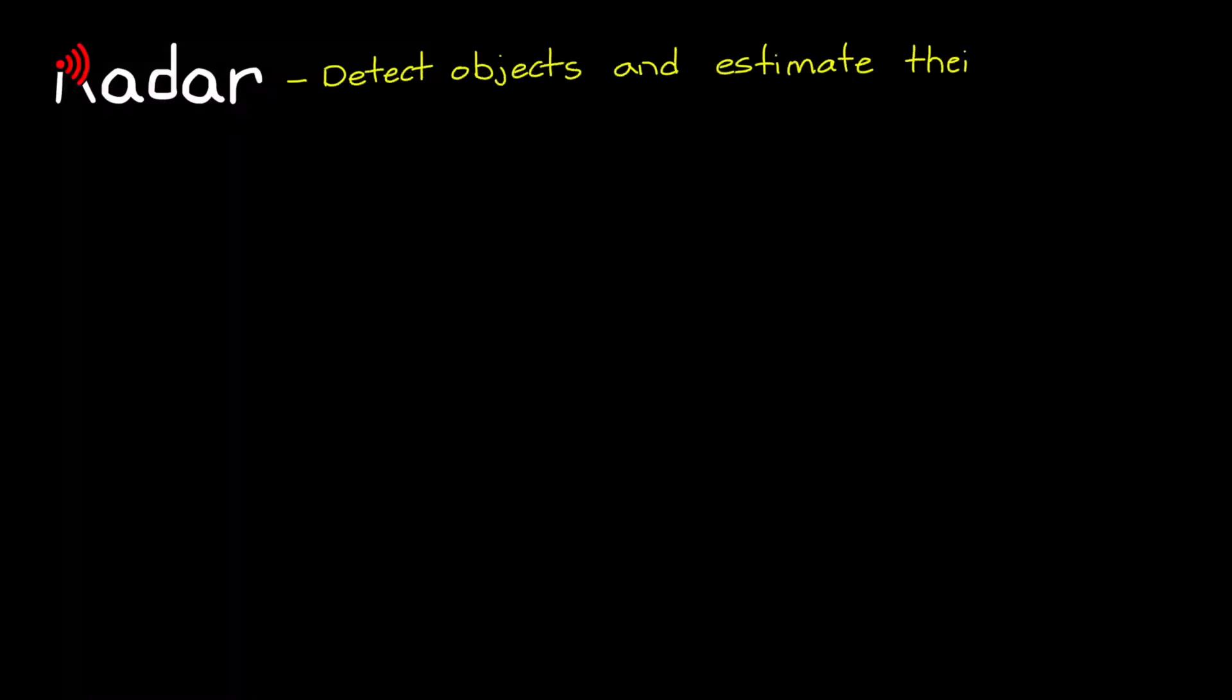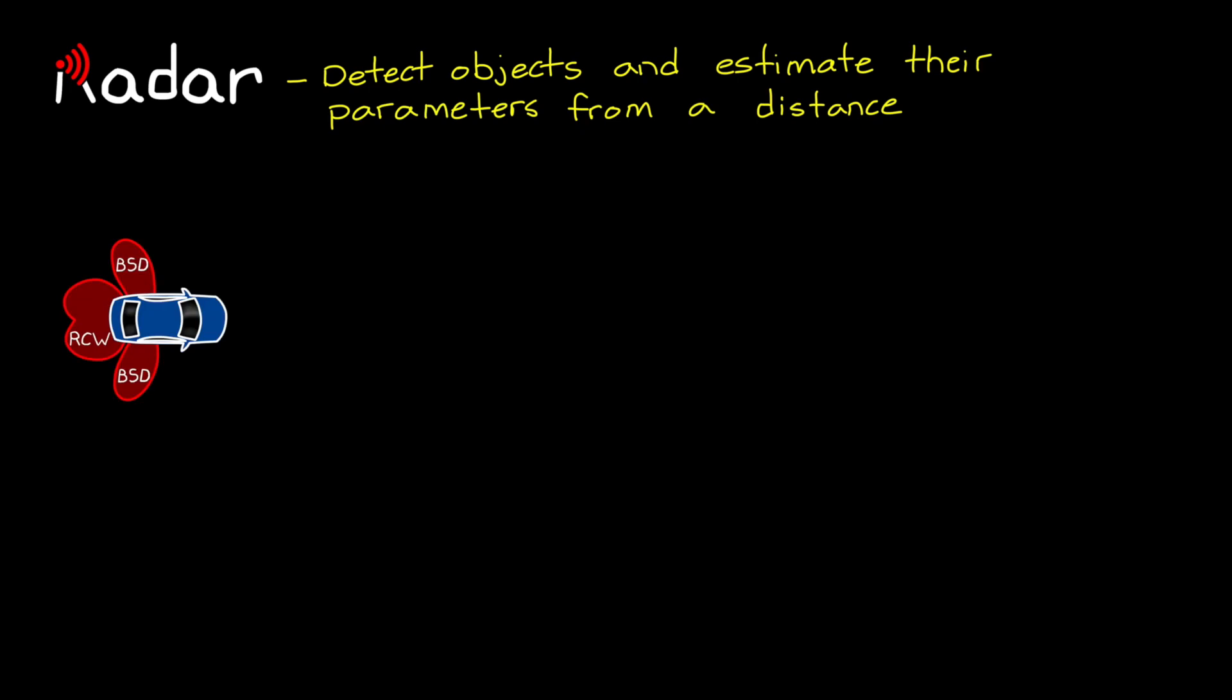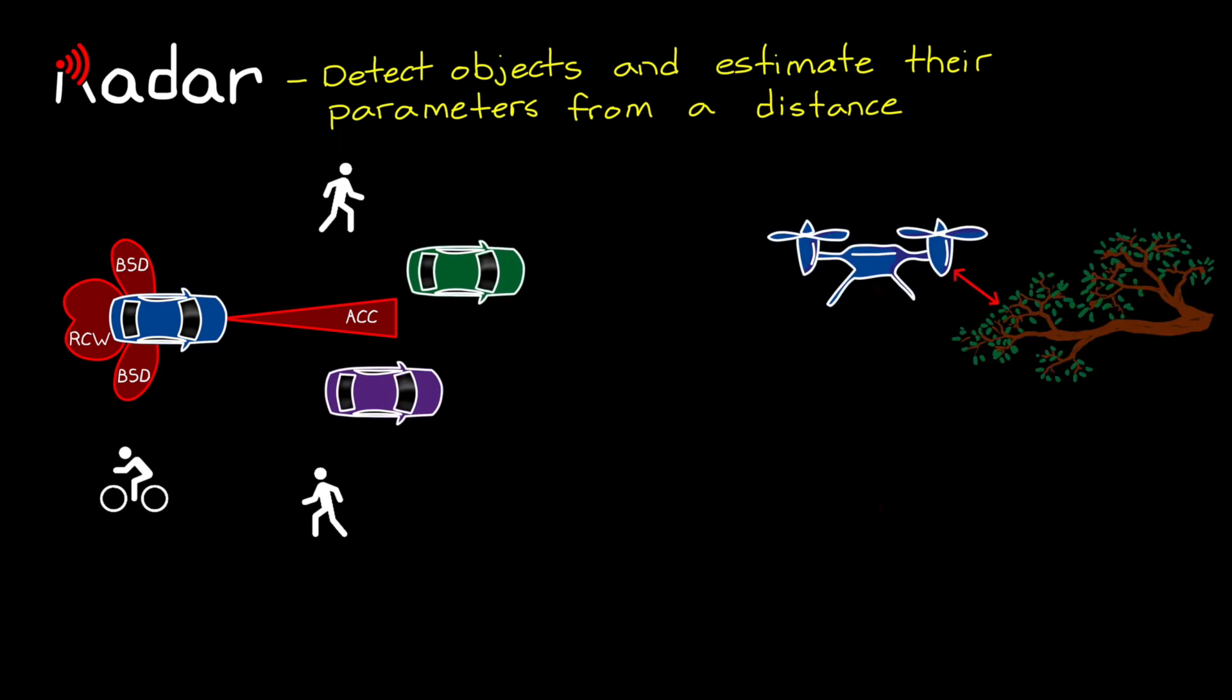Radar is an important part of autonomous vehicles because it allows the vehicle to detect objects and estimate their parameters from a distance, which it can then use to make decisions. Applications for automotive vehicles range from blind spot detection and rear collision warning and adaptive cruise control up to tracking and classifying objects. For flying vehicles, radar is used for object avoidance and measuring altitude.